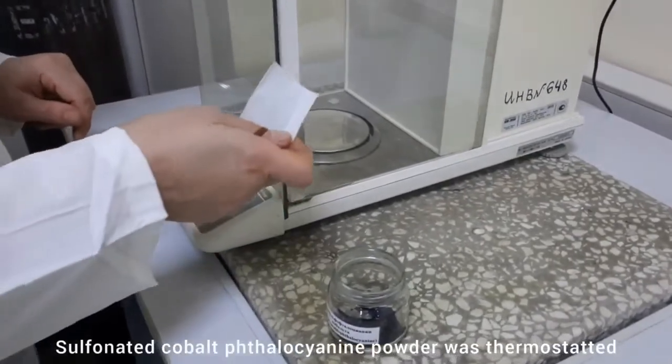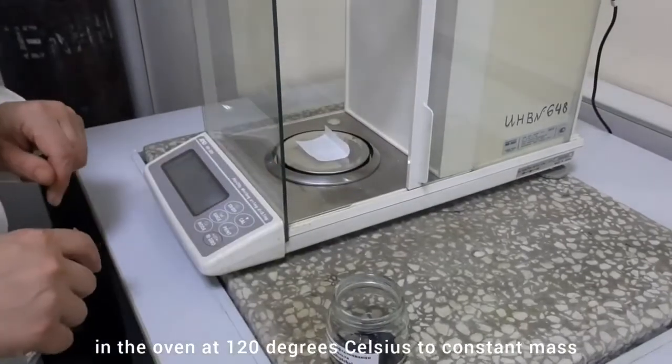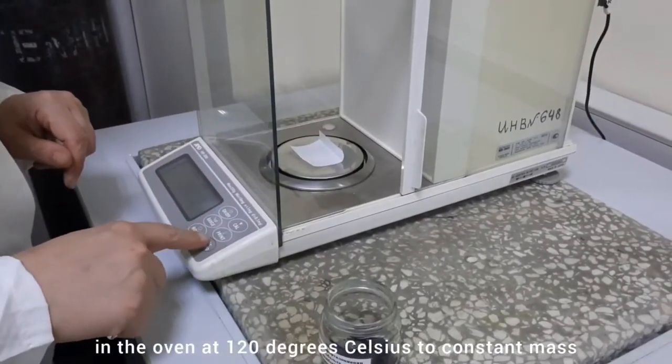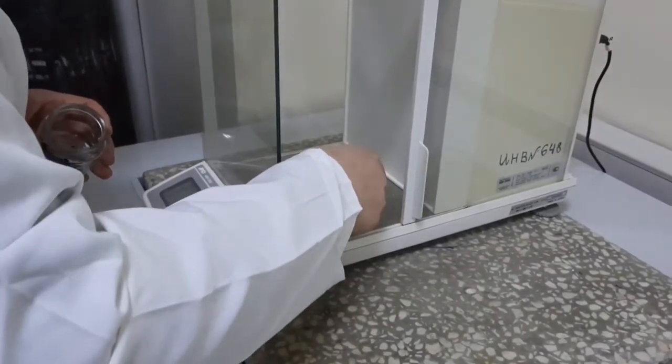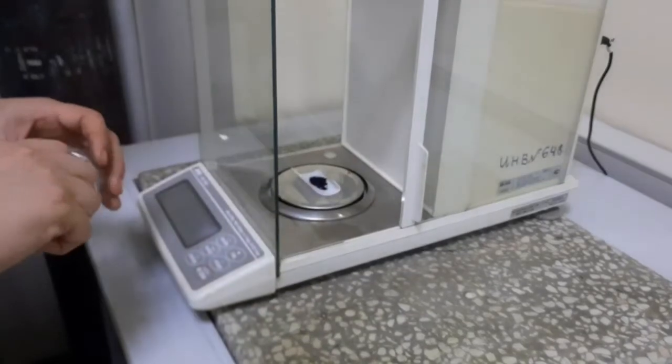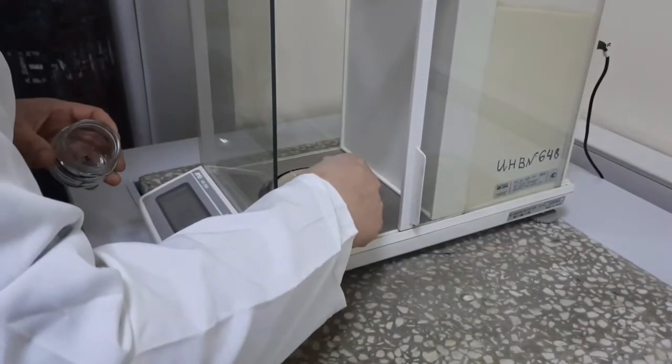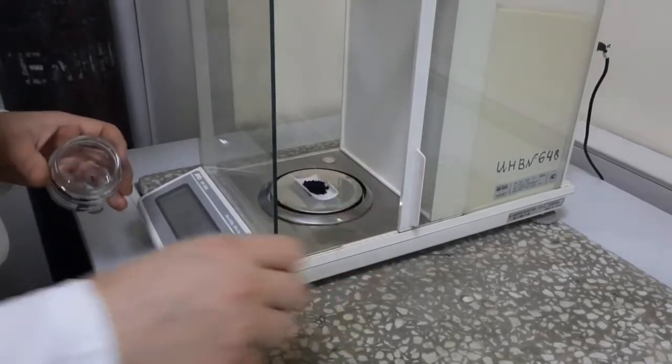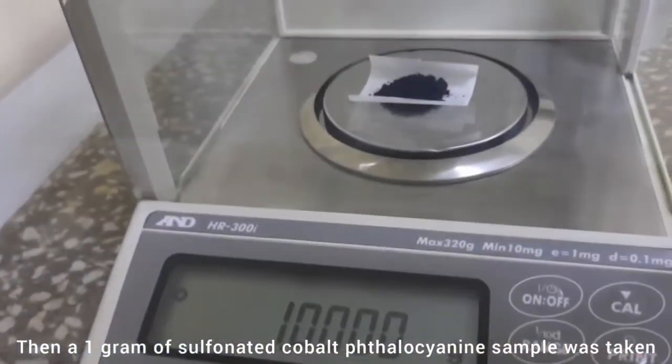Sulfonated cobalt phthalocyanine powder was dried in the oven at 120 degrees Celsius to constant mass. Then a 1 gram sample of sulfonated cobalt phthalocyanine was taken.